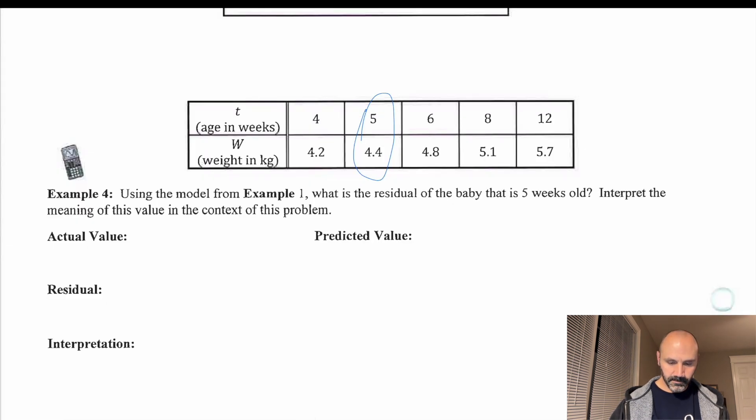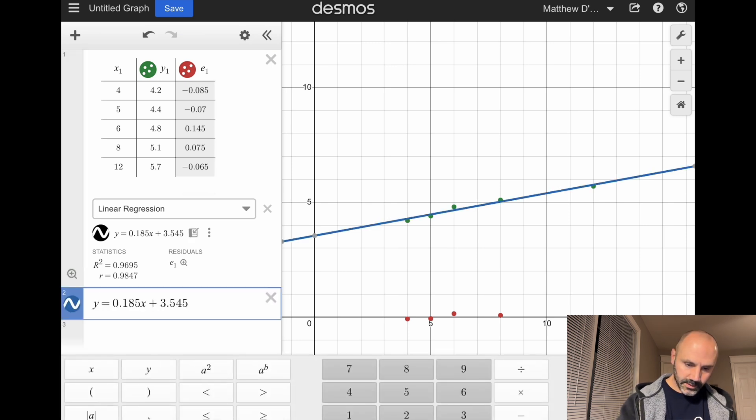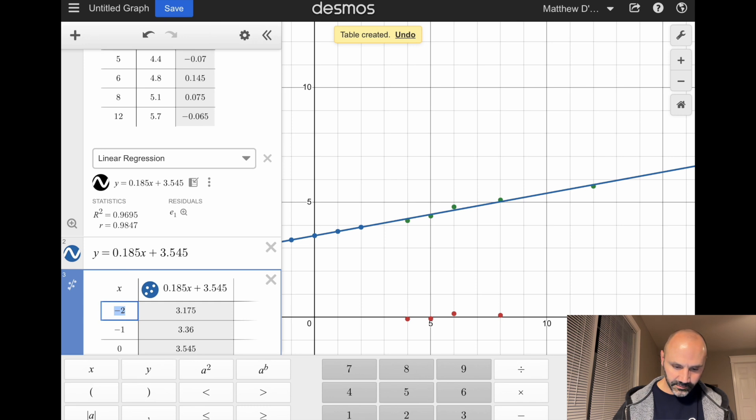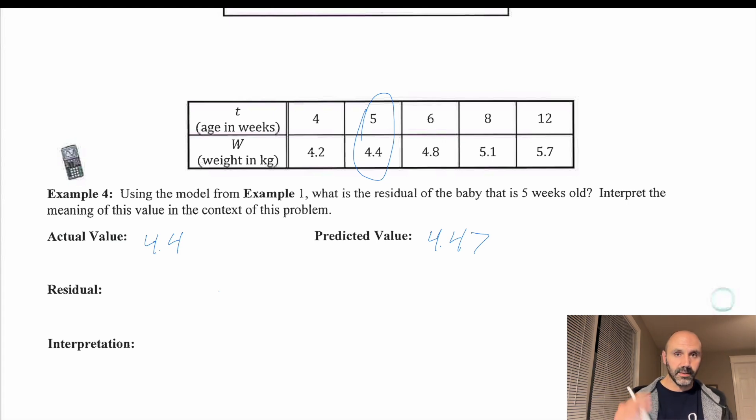So the actual value is 4.4. The predicted value using the regression model, if we were to plug in 5, you would get 4.47. That's easy to see in the Desmos calculator. And then if I put in 5, I get 4.47. So the residual is the actual value minus the predicted value. 4.4 minus 4.47, that gives me negative 0.07. So what's the interpretation here? Well, the model's not perfect. It overestimated this particular value.